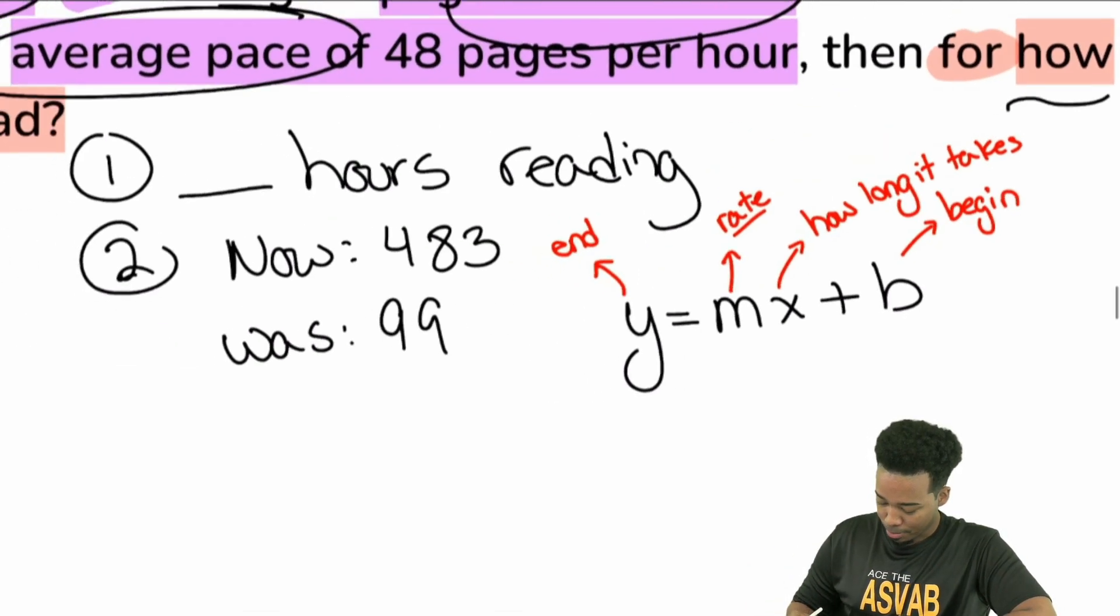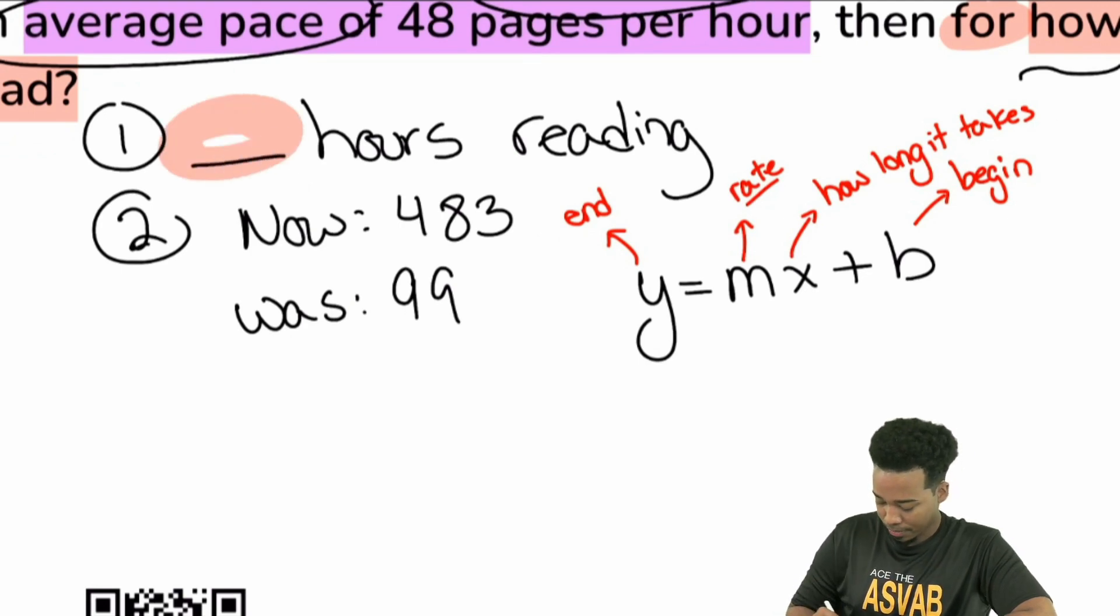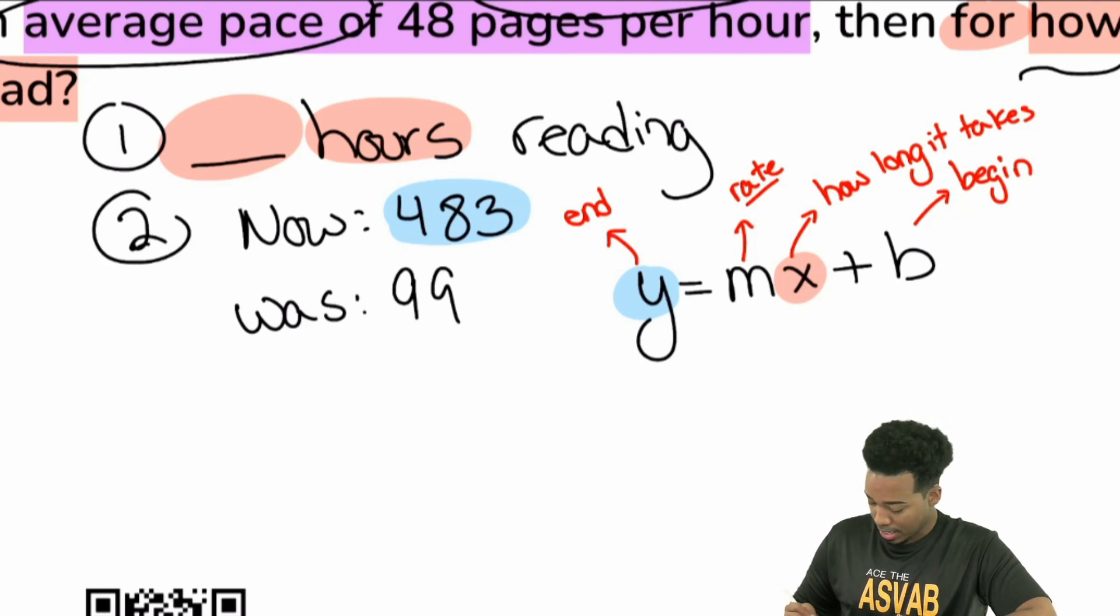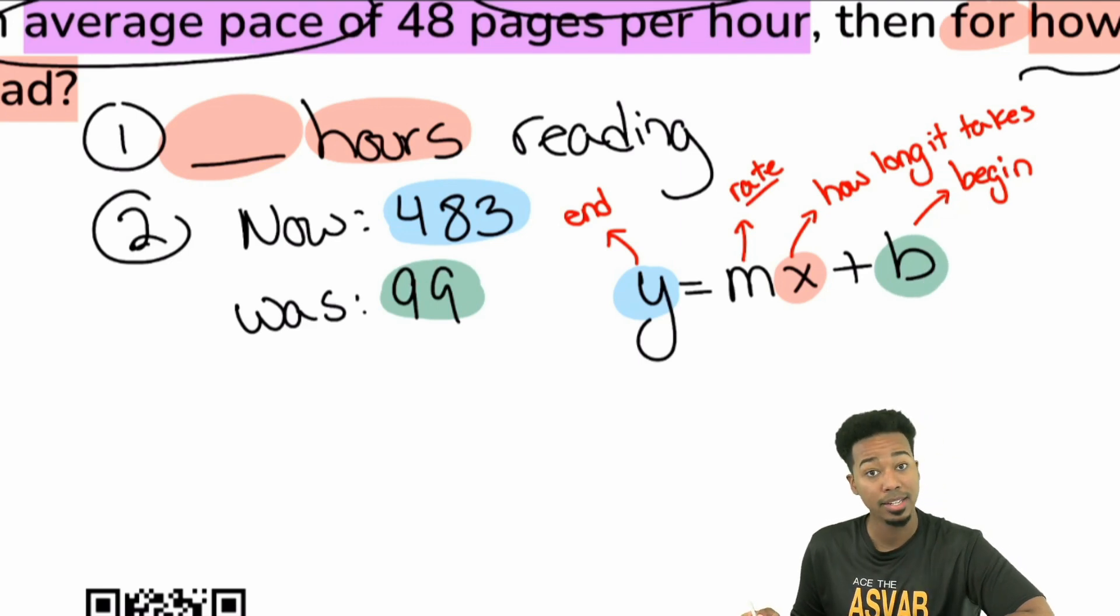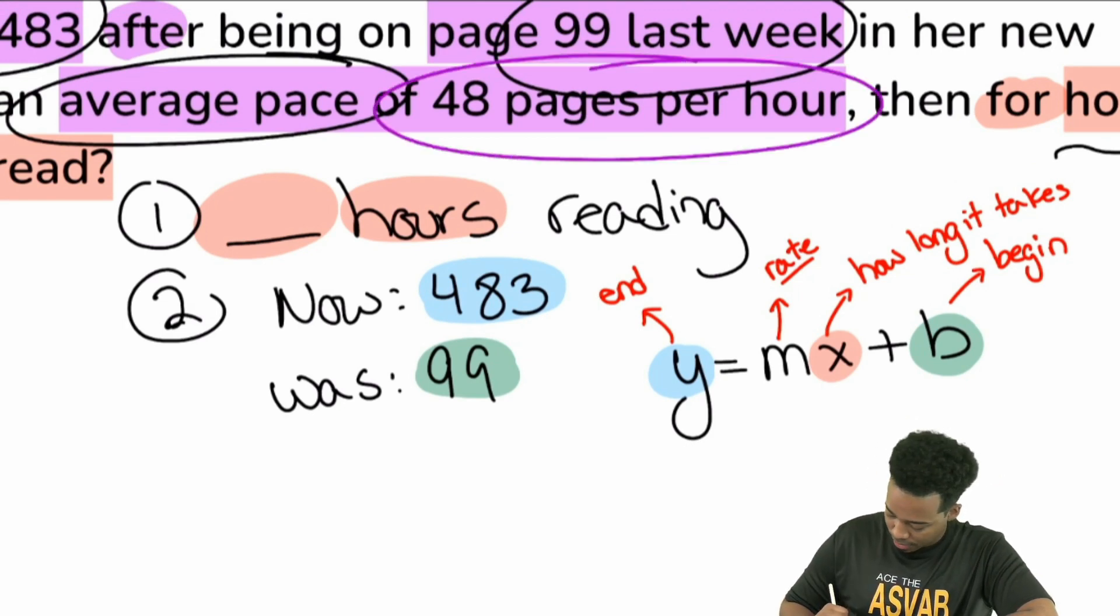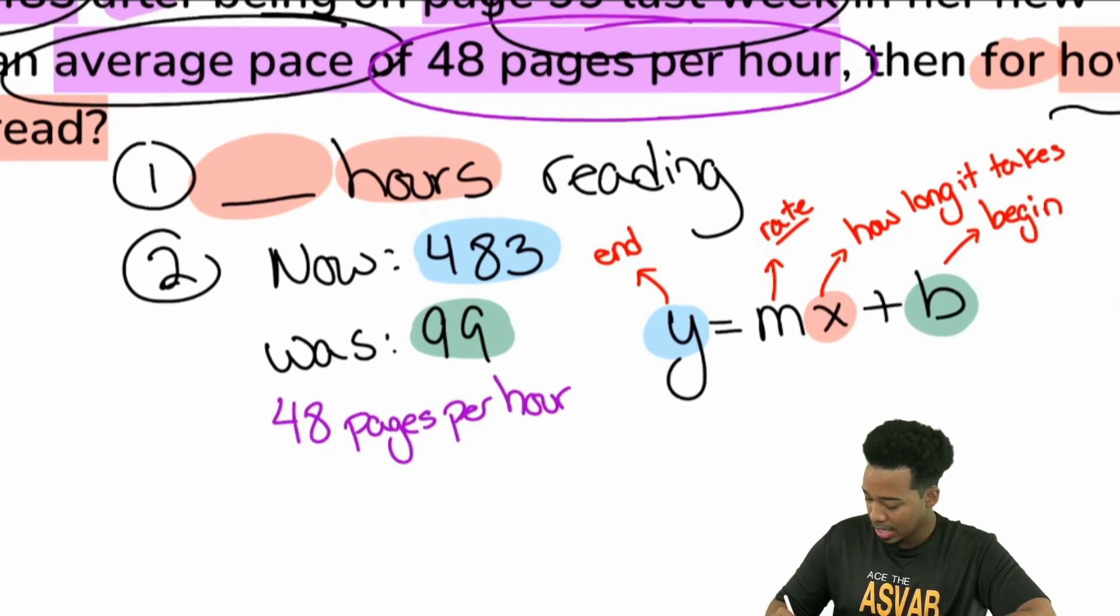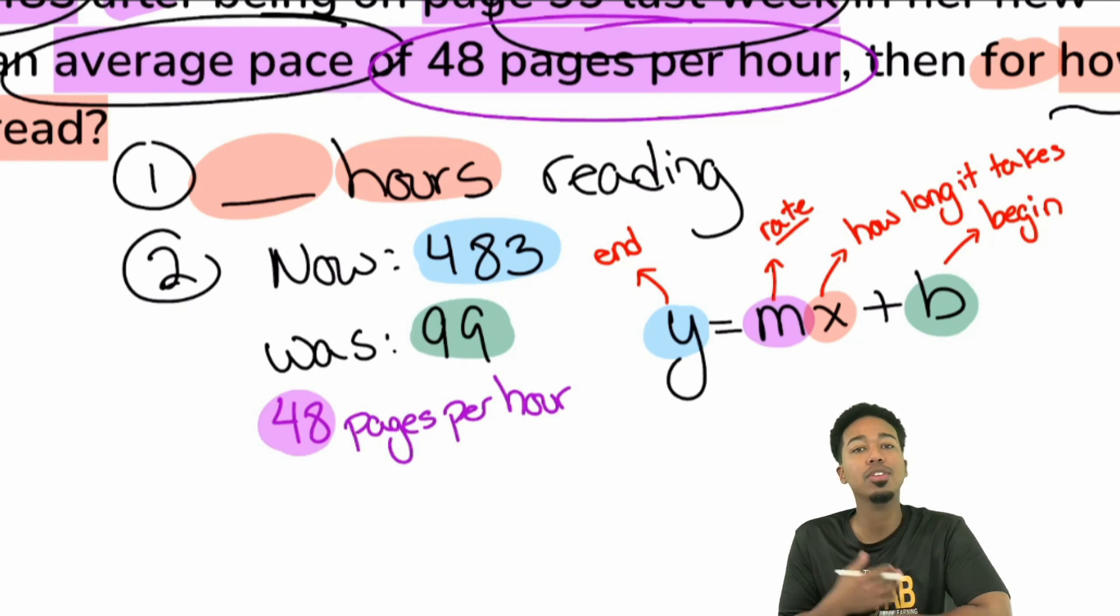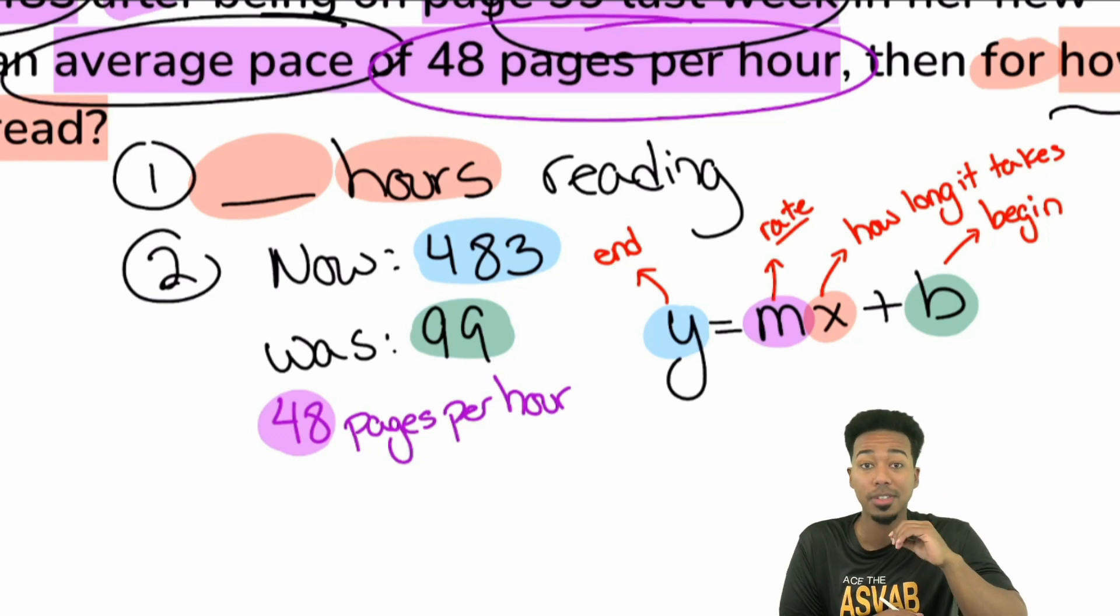I'm going to show you exactly how everything we have fits right in. We're looking for blank hours reading, a number of hours. We're looking for x. We see that it says we are now on page 483. That's where we end at. That's the y. Next up, we were on page 99. That's where we began. And then we are also told that we are reading at a pace of 48 pages per hour. So 48 pages per hour, that is the pace, that is the rate. I hope you see how everything fits nicely into the formula. All we have to do is plug in what we have and solve. That's the beauty of knowing how to set up linear equations because the majority of the questions that you'll deal with on the ASVAB are exactly that.